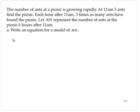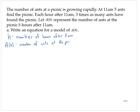The first thing I'm going to do is denote the variables. Then we're going to set up a table that will help us build the model. H represents the number of hours after 11 AM, and A of H represents the number of ants at the picnic. Let me set up a table of values — H versus A of H.